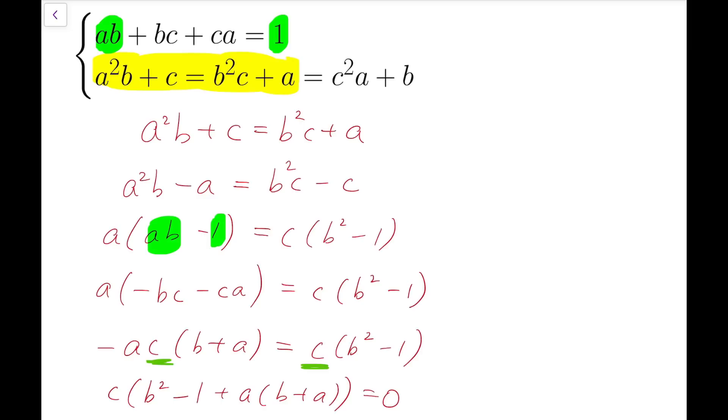And so either we have c equals 0 or inside the bracket we have a² + ab + b² equals 1.